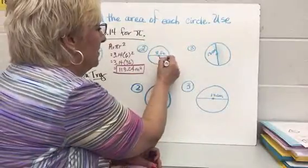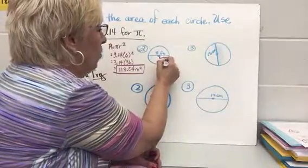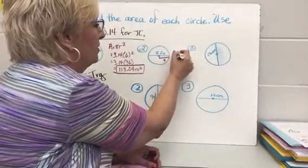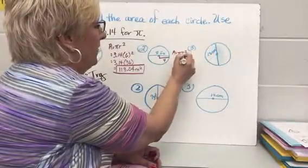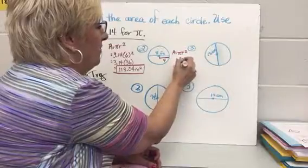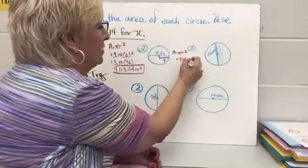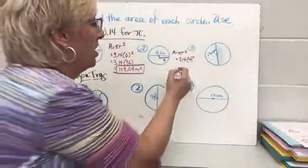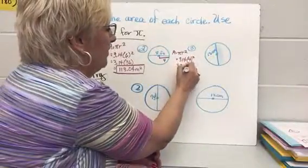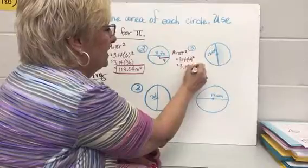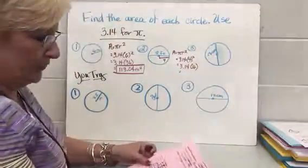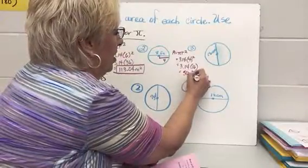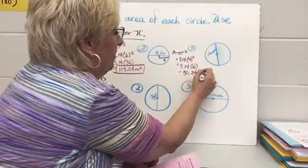Here I've been given a diameter, so to find the radius I take half of it — so the radius is four. Now I plug in: area equals pi r squared, with pi being 3.14 and four squared — which is not four times two, it's four times four. So that's 3.14 times 16, which equals 50.24 square feet.